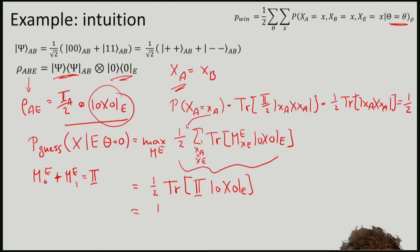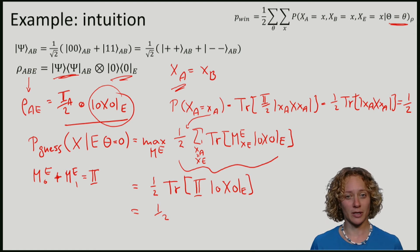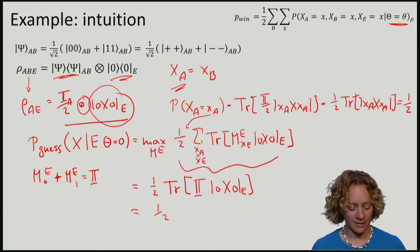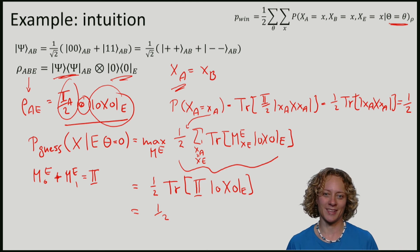So we see that this is just half. So the probability that Eve guesses Alice's measurement outcome is as expected, because she's independent from Alice, and Alice's in the maximally mixed state is a half. Eve cannot do any better than to make a random guess.